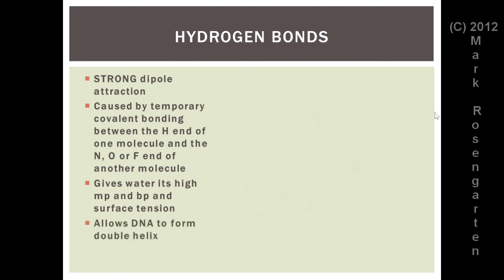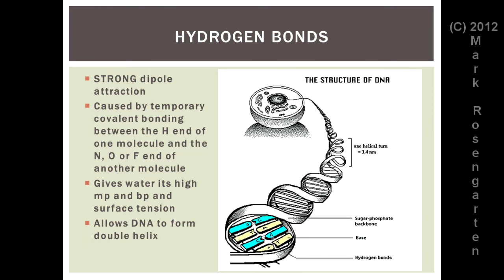Hydrogen bonds also allow DNA to form a double helix. The base pairs that hold together the DNA structure are not actually chemically bonded to each other — because if they were, every time a DNA molecule unraveled there'd be a significant chance of damage to the base pair. The hydrogen bonds are not permanent bonds; they're only temporary, which means they're a lot more easily broken, giving the DNA molecule a much better chance of successfully replicating itself over and over. And those are attractive forces.